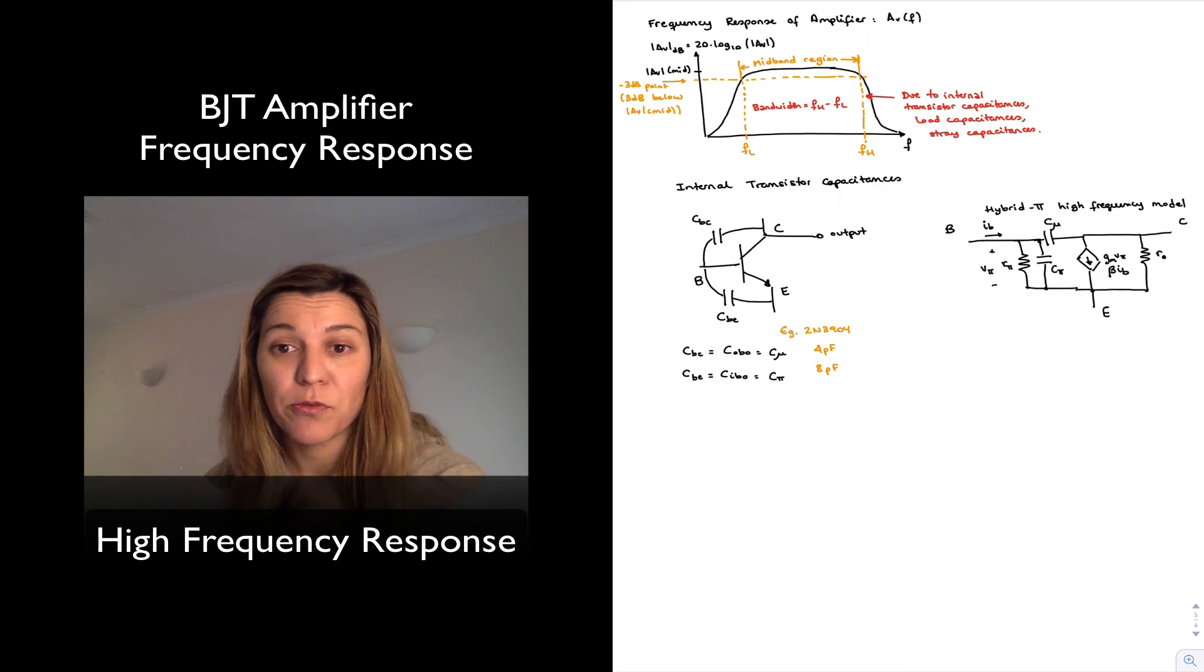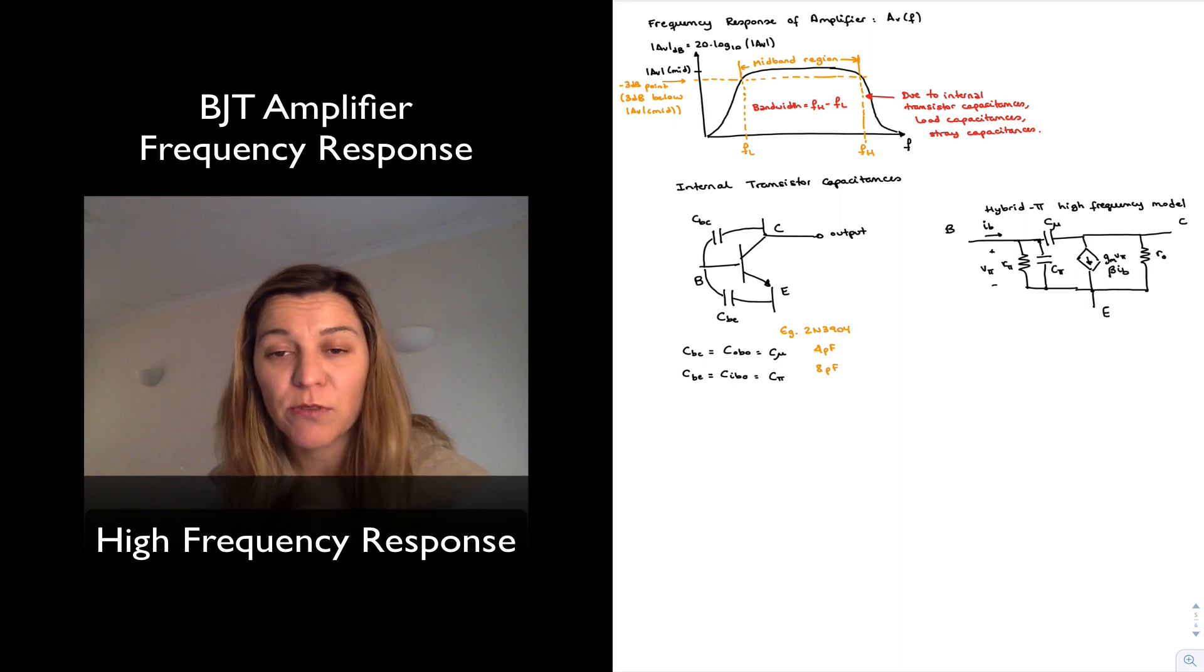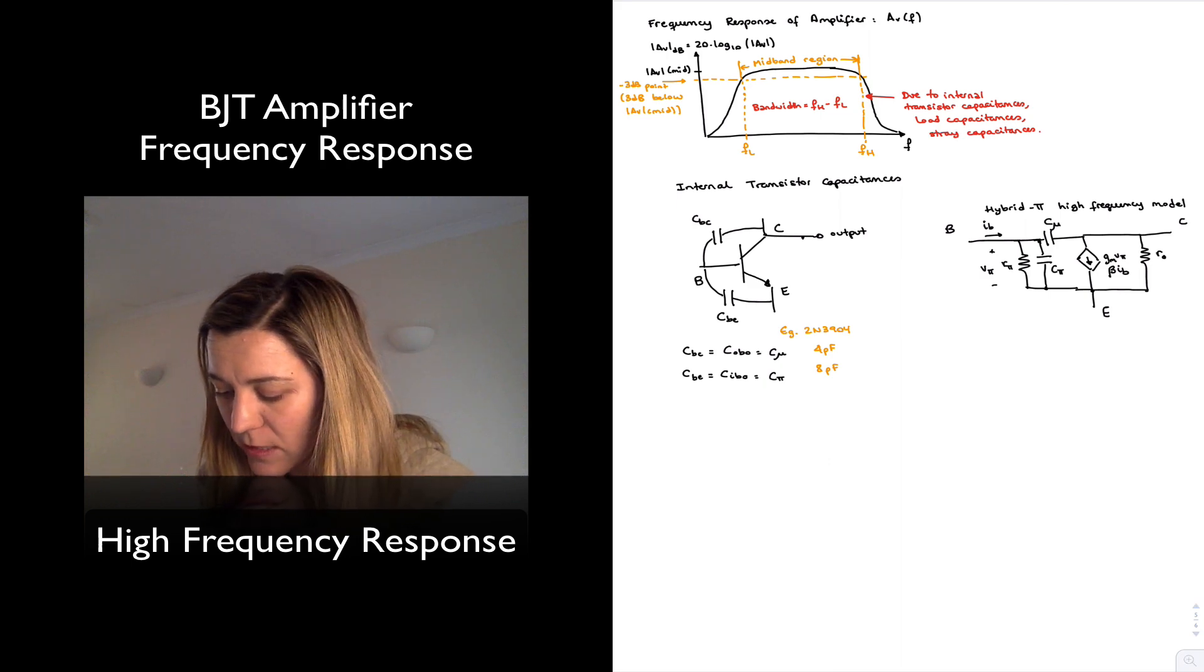Which could be simply the input stage of, or the input resistance of a subsequent stage for the amplifier. And we're typically going to represent that. We've been representing it with a resistor, as a resistive load. The most correct way of representing a load will be considering its resistive component, RL, but also its capacitive component, CL.